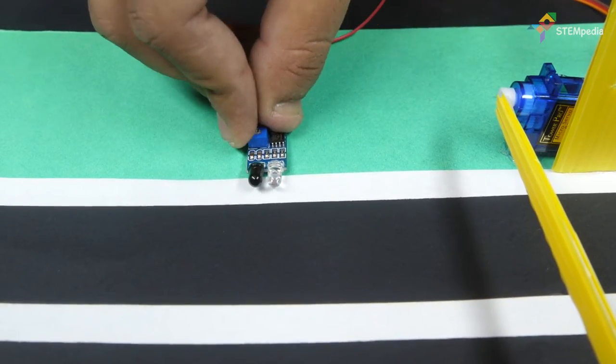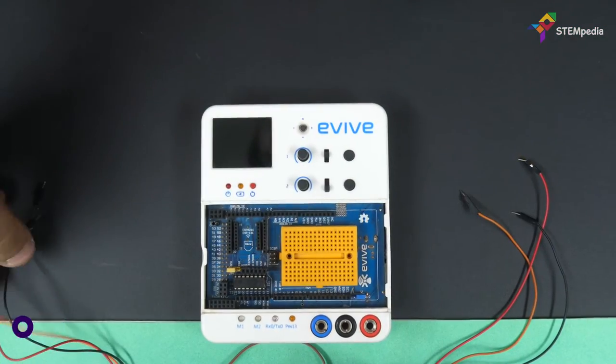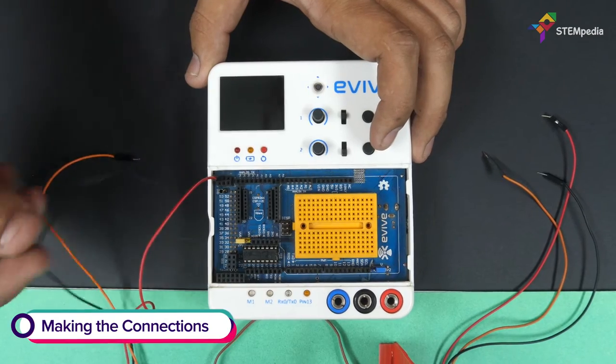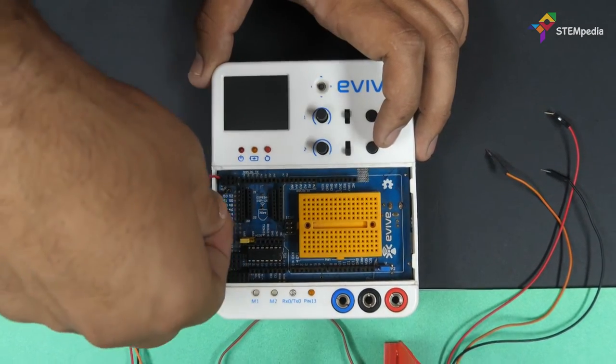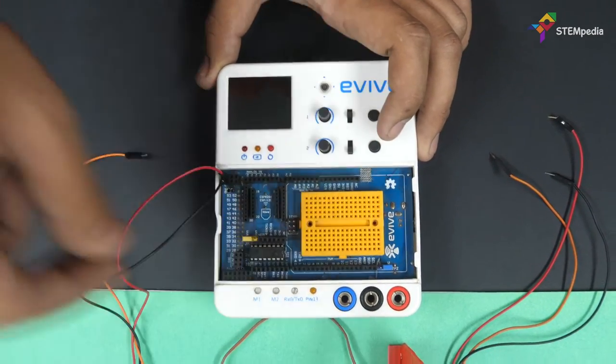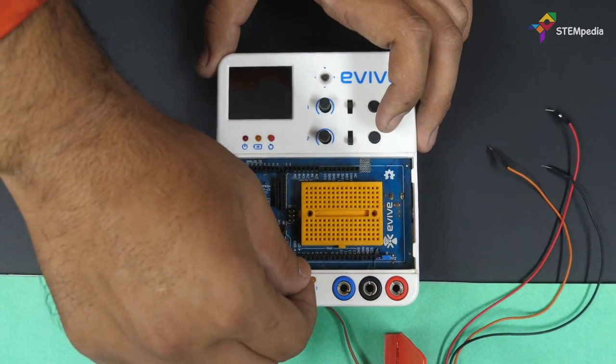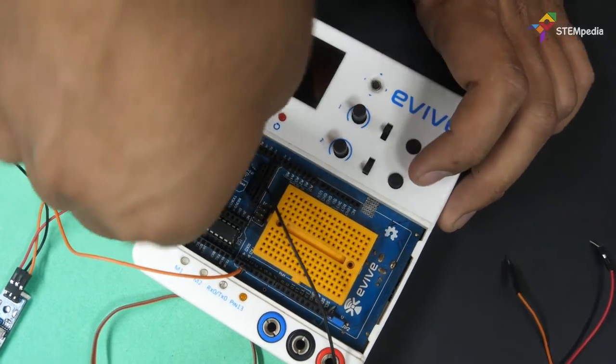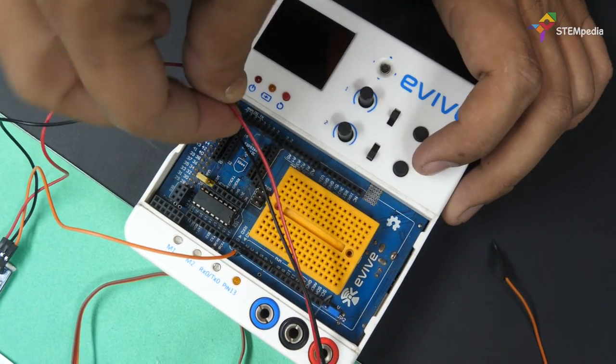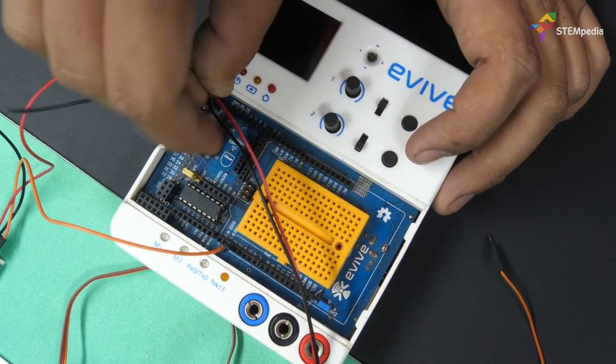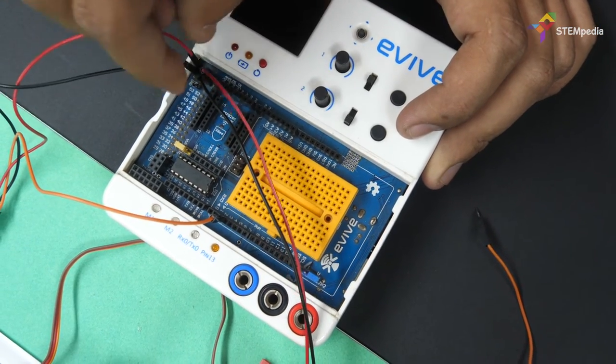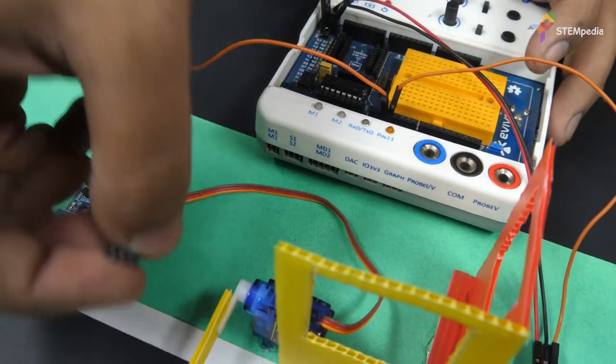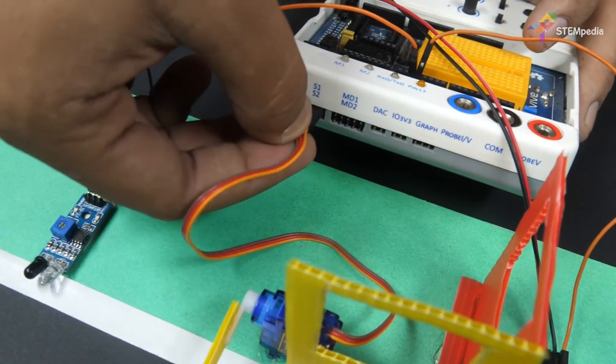Now, let's move on to the connections. First, let's connect the IR sensor. Connect VCC of both the IR sensors to the 5V pins of evive. Connect ground of both the IR sensors to the ground pins of evive. Connect the signal pin to evive's digital pin 3 for sensor 1 and pin 2 for sensor 2. Then, connect the servo motor to evive's servo channel 1.